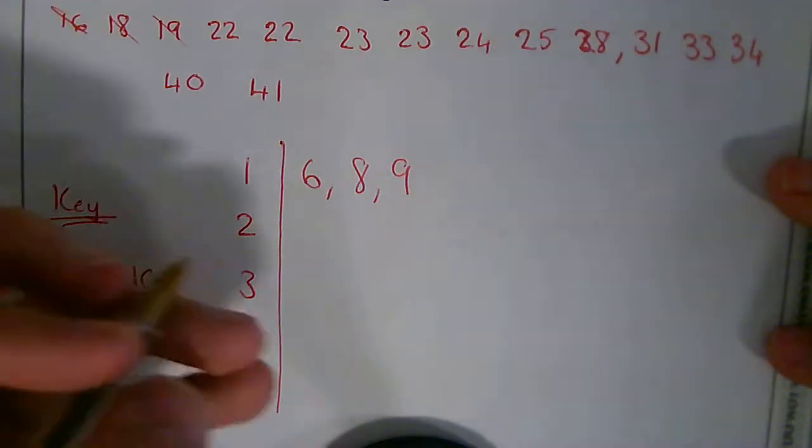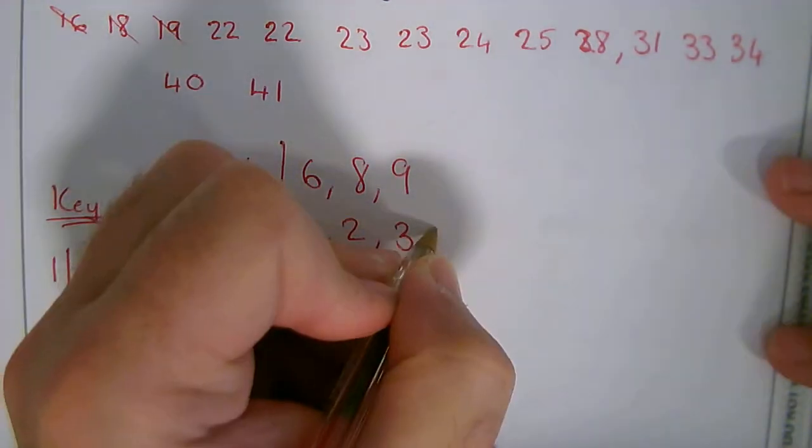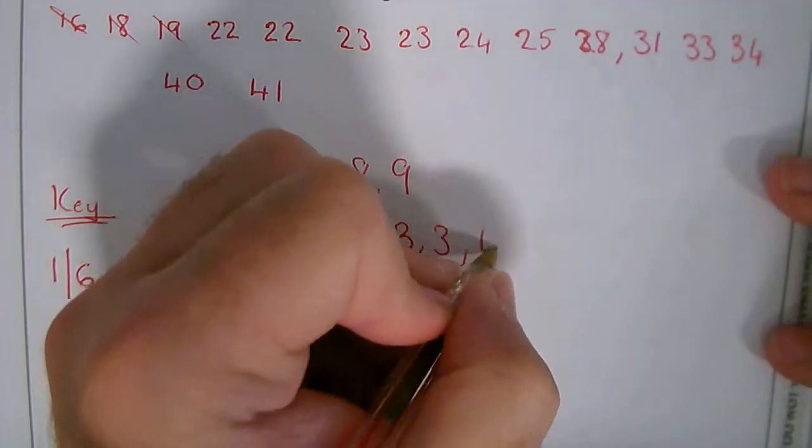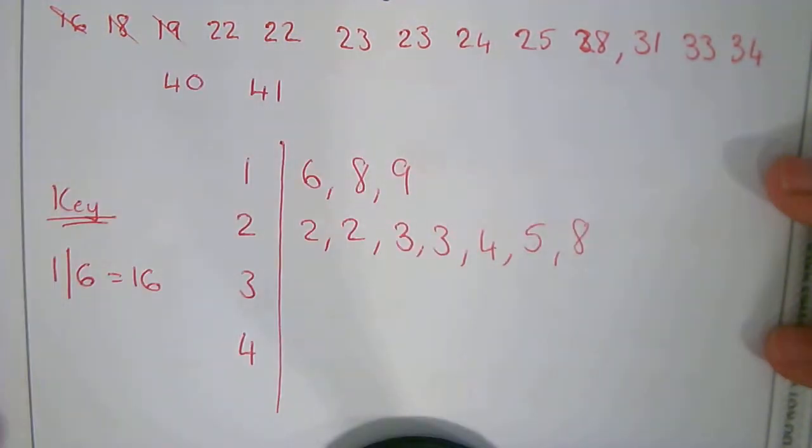Then I move on to my 20. So I've got 22, another 22, 23, 23, a 24, a 25, and that 28 that I forgot about originally.